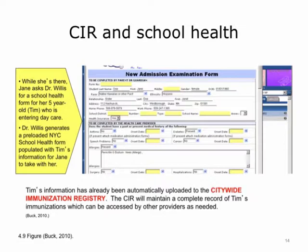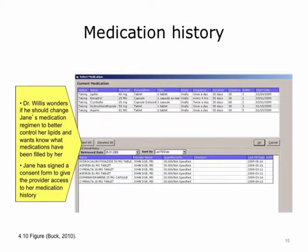Incidentally, the EHR also sends all immunization information automatically to the Citywide Immunization Registry (CIR), which maintains a complete record of Tim's immunizations. Finally, Dr. Willis decides he should do a little more follow-up work by checking Jane's medication regimen to monitor her lipid control. He can do this by finding out the medications that have been filled for her elsewhere. Jane signs a consent form and allows him to query the medication history function, which is able to retrieve prescription fill histories from her commercial insurance company.